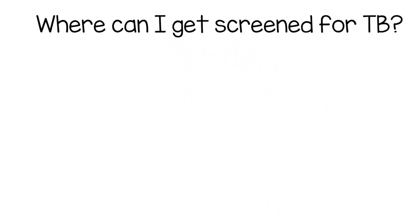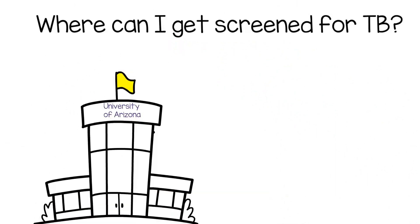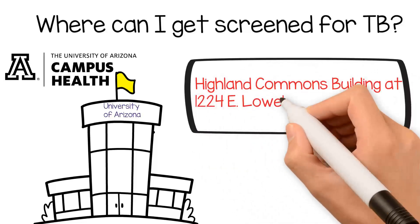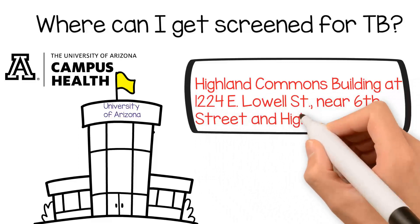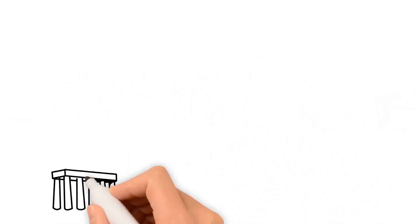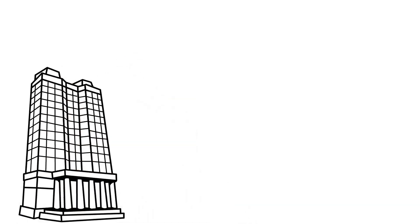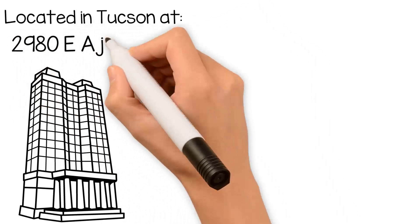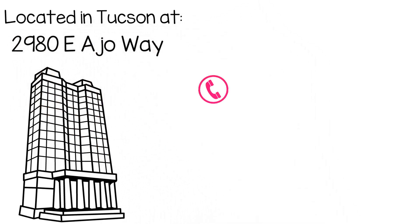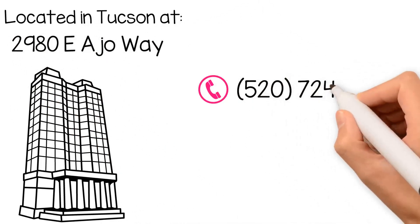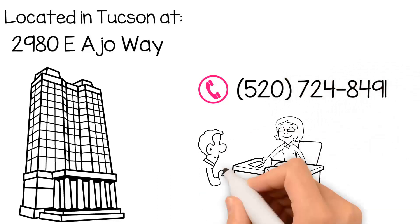Where can I get screened for TB? At the University of Arizona Campus Health Service located in the Highland Commons Building at 1224 East Lowell Street near 6th Street and Highland Avenue, or at the Pima County Health Department TB Control Office located off campus in Tucson at 2980 East Aja Way. Please call ahead at 520-724-8491 to make an appointment.